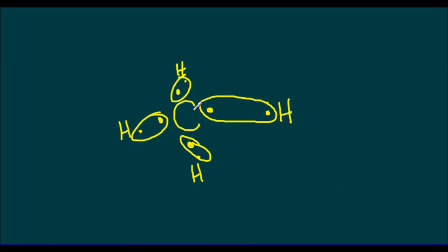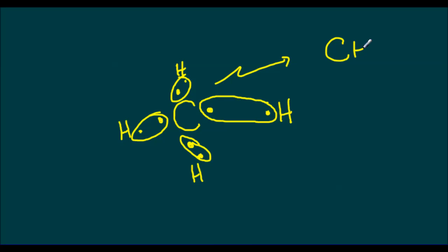They're sharing these electrons, and in the end what ends up happening is that carbon has 8 electrons in its outer orbital because it's sharing these, and it's fat and happy. While these hydrogens have 2 electrons in their outer shell, and they're also fat and happy. And we end up with a compound called CH4, which is known as methane.